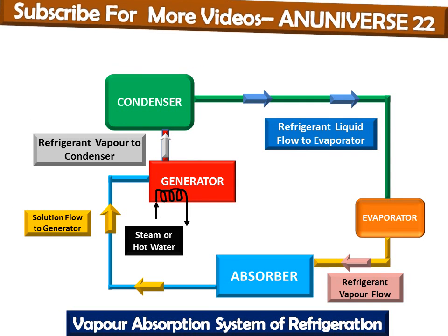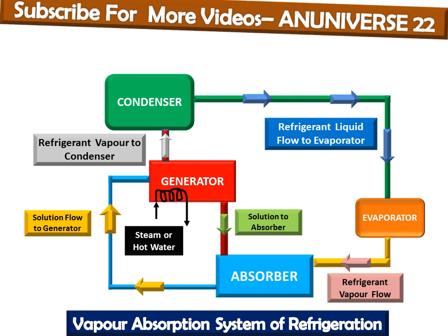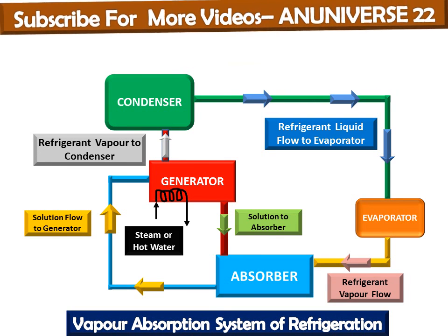The liquid refrigerant then passes on to the evaporator, completing the refrigerant cycle. The absorbent flows back from the generator to the absorber. Heat is generated when the refrigerant is absorbed by the absorbent, which is known as the heat of absorption or heat of dilution.